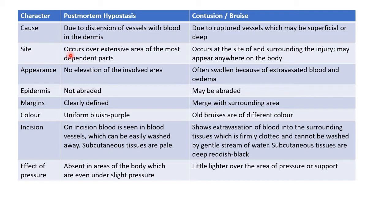Now let us see about the site of hypostasis. It occurs over an extensive area of the most dependent parts. In case of bruise, it occurs at the site of or surrounding the injury and may appear anywhere on the body. In case of hypostasis it occurs over the most dependent parts, whereas in case of bruise it can occur anywhere on the body depending on the site of injury.